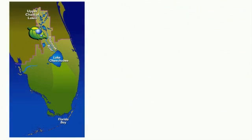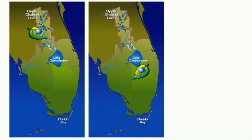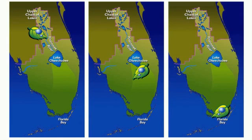Theoretically, a drop of water could fall on a leaf in the upper chain of lakes, travel down the meandering Kissimmee River, float over the natural southern shore of Lake Okeechobee, ride the sheet of water slowly gliding over the southern peninsula, and finally drift into Florida Bay.